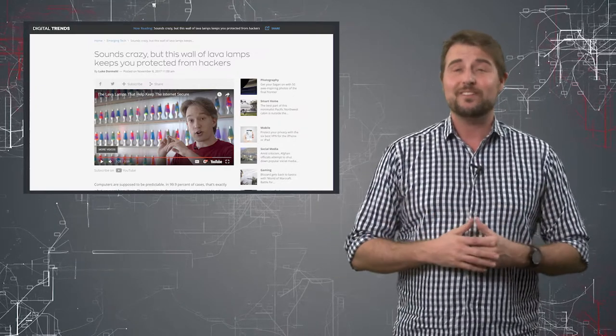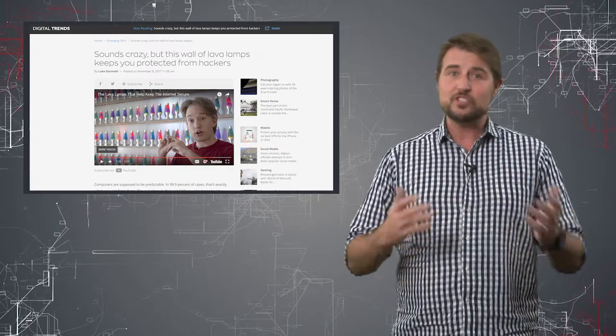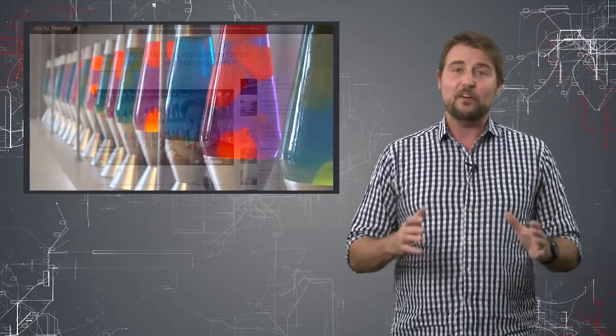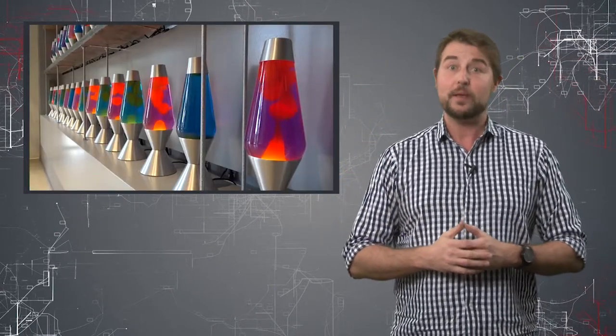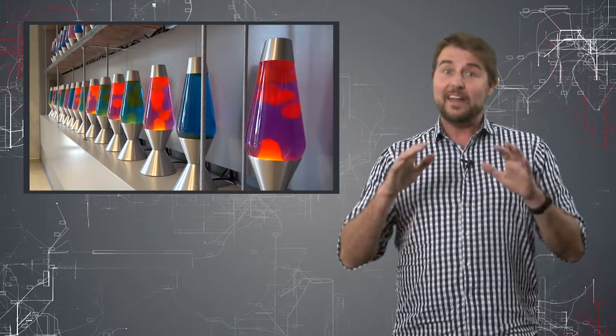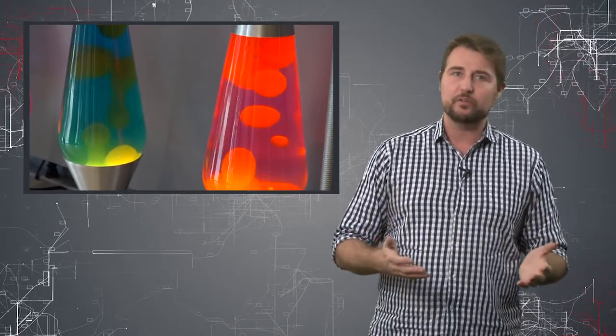In any case, this all brings us to today's interesting story, which just was to show that Cloudflare actually has a wall that has a hundred lava lamps. And they're constantly taking still images and pictures of those lava lamps. And it's all to provide a truly random seed for all their pseudo-random number generation that they use for digital certificates in SSL.